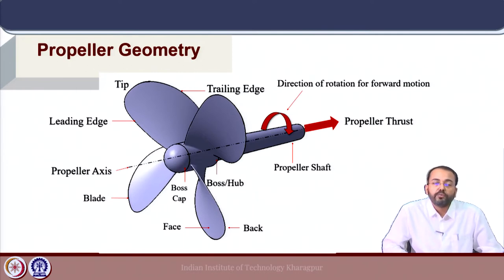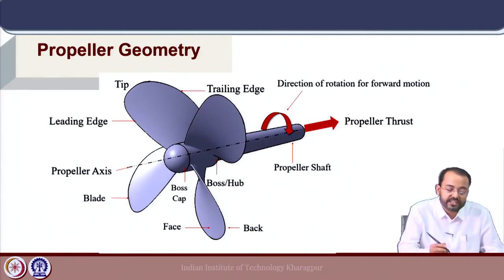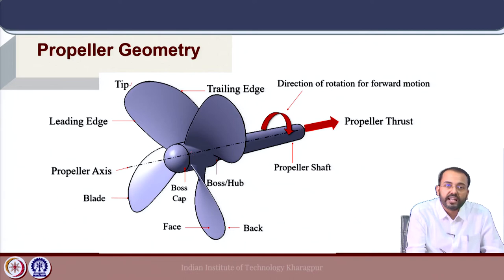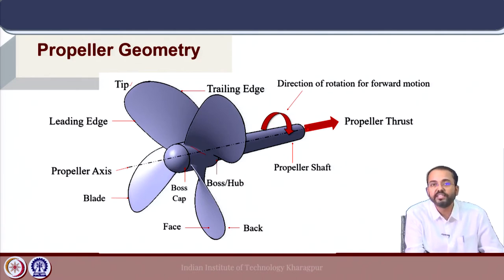This was the propeller geometry covered in the last lecture. The propeller blades are mounted on the boss or the hub, and the blade has different parts consisting of the tip, the root where it is attached to the hub, and the leading and trailing edges. The propeller shaft axis is connected to the hub, and the propeller rotates in a clockwise direction producing thrust in the forward direction toward the ship.